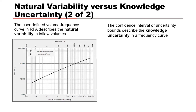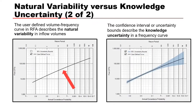There are two types of uncertainty accounted for in RMCRFA. When we enter the user-defined volume frequency curve developed in Best Fit, we describe the natural variability of inflow volumes — that's the mode curve. The confidence interval or uncertainty bounds describe the knowledge uncertainty, which is why we can narrow it when we do additional study.